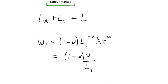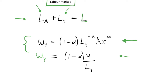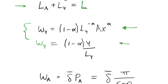We can start by noting that we have some labour force for the whole economy L, which is split into our two sectors: workers in the R&D sector L_A and workers in the final goods sector L_Y. The wage in the final goods sector W_Y is equal to the marginal product of labour because it's a perfectly competitive labour market. Using the first-order condition from the profit maximisation problem in the final goods sector, we can substitute in for Y to get that the wage in the final goods sector equals (1 - alpha) multiplied by Y over L_Y.